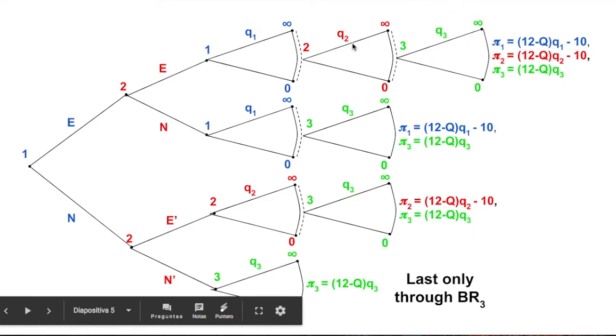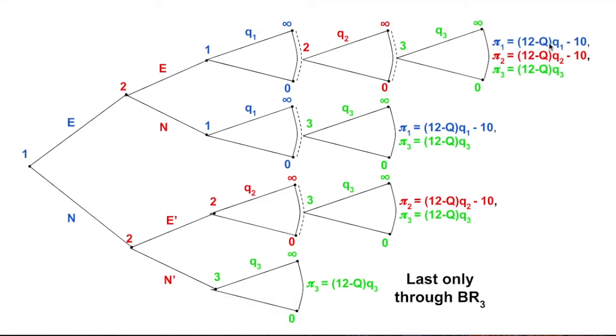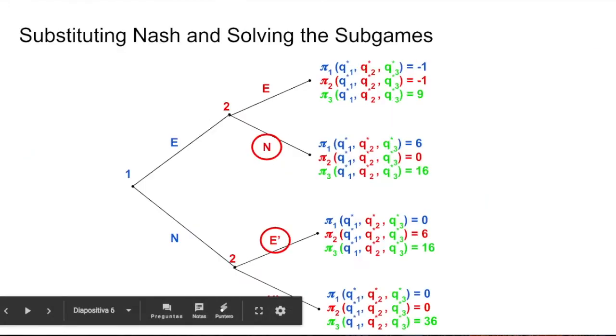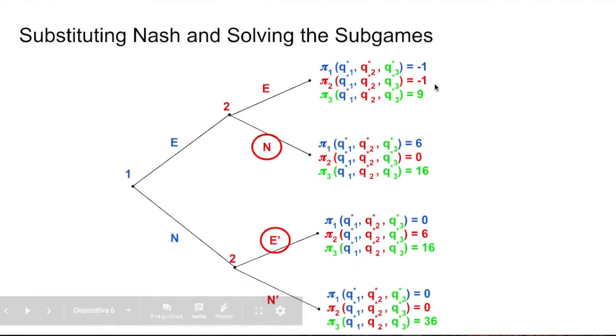Now having the game again, we have this solution. We substitute and we get the best responses. We get the Nash equilibrium, best responses, substitute, and fold back the tree. And this is two players, two players, and one player. Then when we do that, we get this. Those are the payoffs that are related to the equilibrium strategies all along the game.